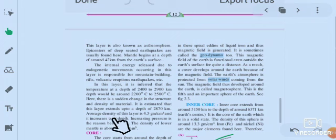Average density of this layer of 4.5 grams per cubic meter increases with depth. Increasing pressure is the reason behind this. The density of lower mantle is about 5.7 grams per cubic meter.